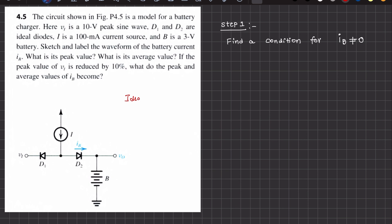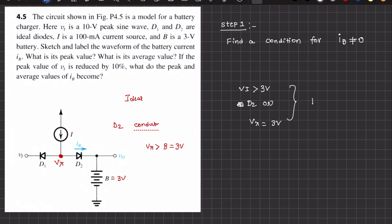First of all, the diodes are ideal diodes. For a non-zero condition of IB, diode D2 must be conducting. In order for D2 to conduct, the voltage Vx must be greater than the battery voltage, which is 3 volts. So Vx must be greater than 3 volts for D2 to start conducting and IB to be non-zero. This happens when VI is greater than 3 volts. When D2 is conducting, Vx is 3 volts, so D1 must be off.